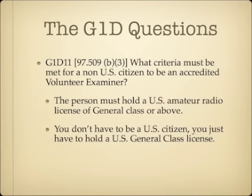What criteria must be met for a non-U.S. citizen to be an accredited volunteer examiner? The person must hold a U.S. amateur radio license of general class or above. So for non-U.S. citizens, it's essentially the same criteria — you don't have to be a citizen, you just have to be a U.S. general class license holder.